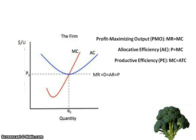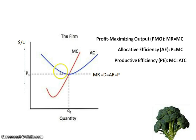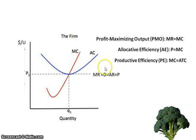The next one is productive efficiency — producing goods as cheaply as possible. For that one, we're looking at where the marginal cost curve intersects the ATC curve at its minimum. It happens to be at the same spot here, but this is the one that's not always the case. What you want to see is where that intersection is and whether it's happening at the firm's output level. A perfectly competitive firm does not always produce at the productively efficient amount.